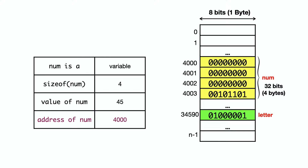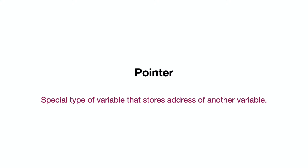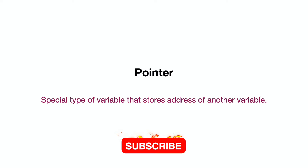To summarize: num has 4 bytes allocated, the value of num is 45, and the address of num is 4000 — the first byte address. Now, you can store this address in a variable. You can try storing it in an integer variable, but the address may not fit within the integer range. So we use a special type of variable called a pointer. A pointer is a special variable in a programming language that stores the memory location address of another variable.